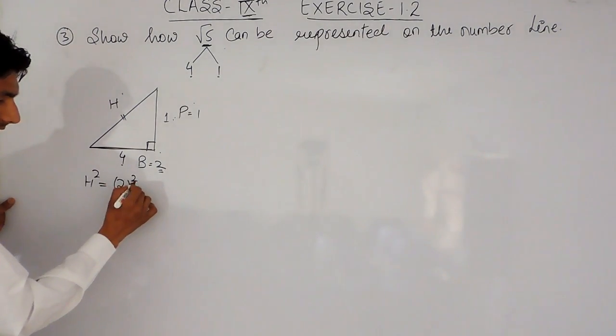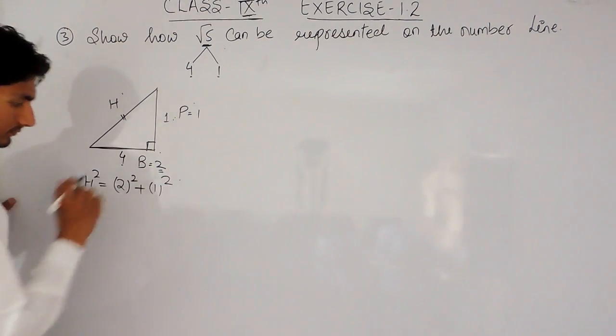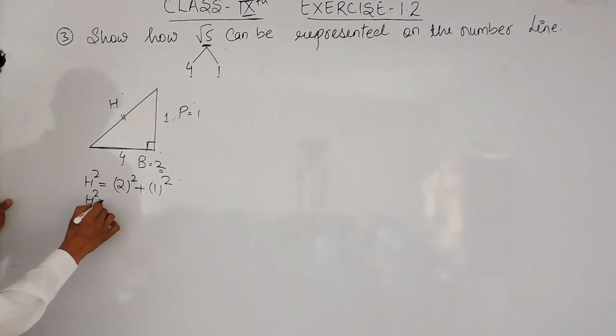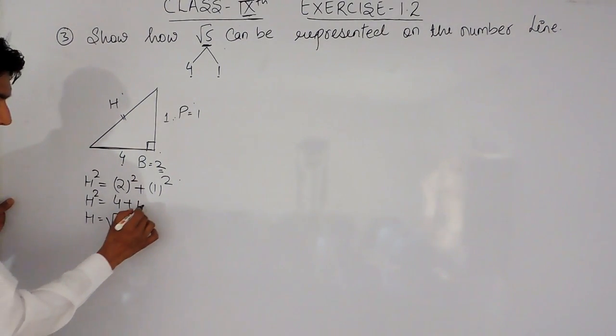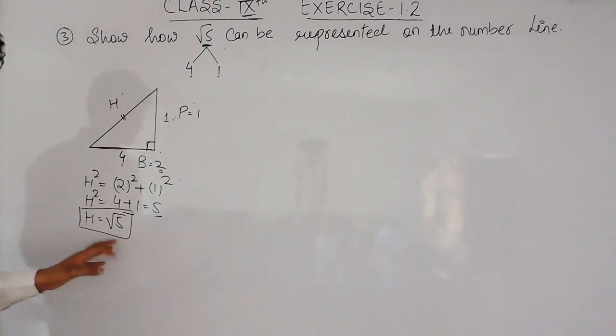so that will be 2 square plus and this will be 1 square. So, h square will be equal to 4 plus 1, so the hypotenuse will be equal to root 5. This is 5 and if I have to remove the square, I have to square root both the sides. So, here the hypotenuse should be root 5.